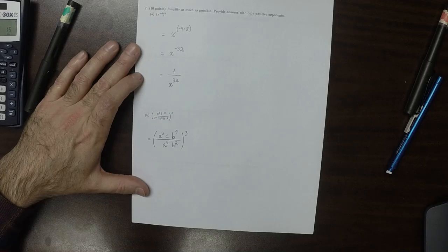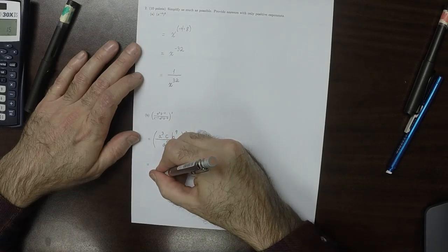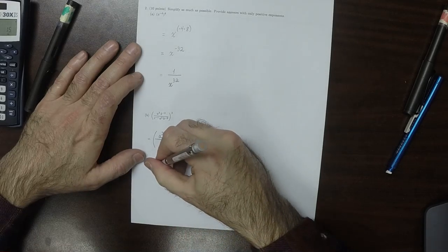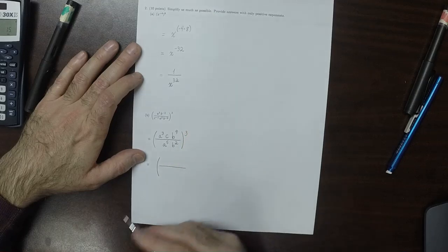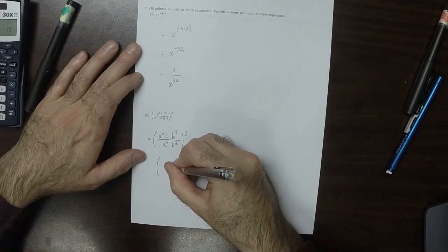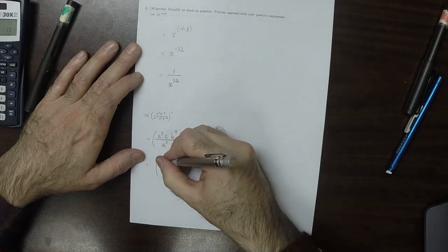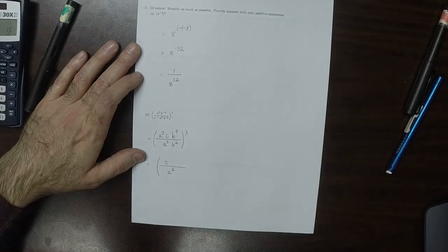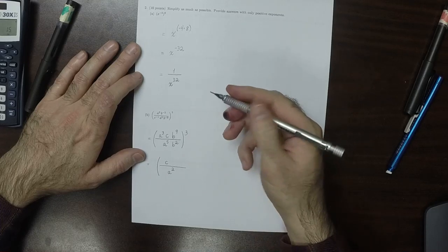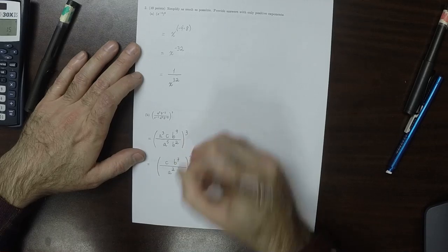Now we're going to start canceling where possible. As for the a's, there's 3 in the numerator and 5 in the denominator. So when we're done canceling, there'll be 2 left over and they will be in the denominator. The c, there's nothing to cancel it, so I'll just leave it. When we cancel the b's, there's 9 in the numerator and 2 in the denominator, so there'll be 7 left over and they will be in the numerator. Cubed.